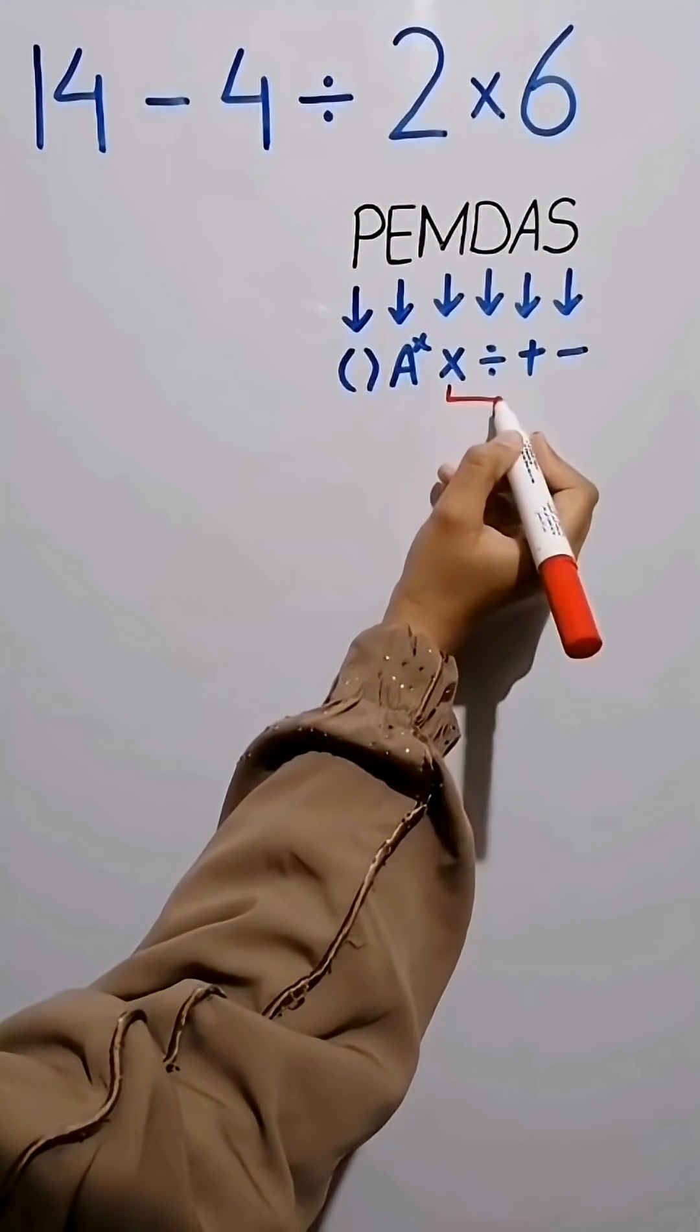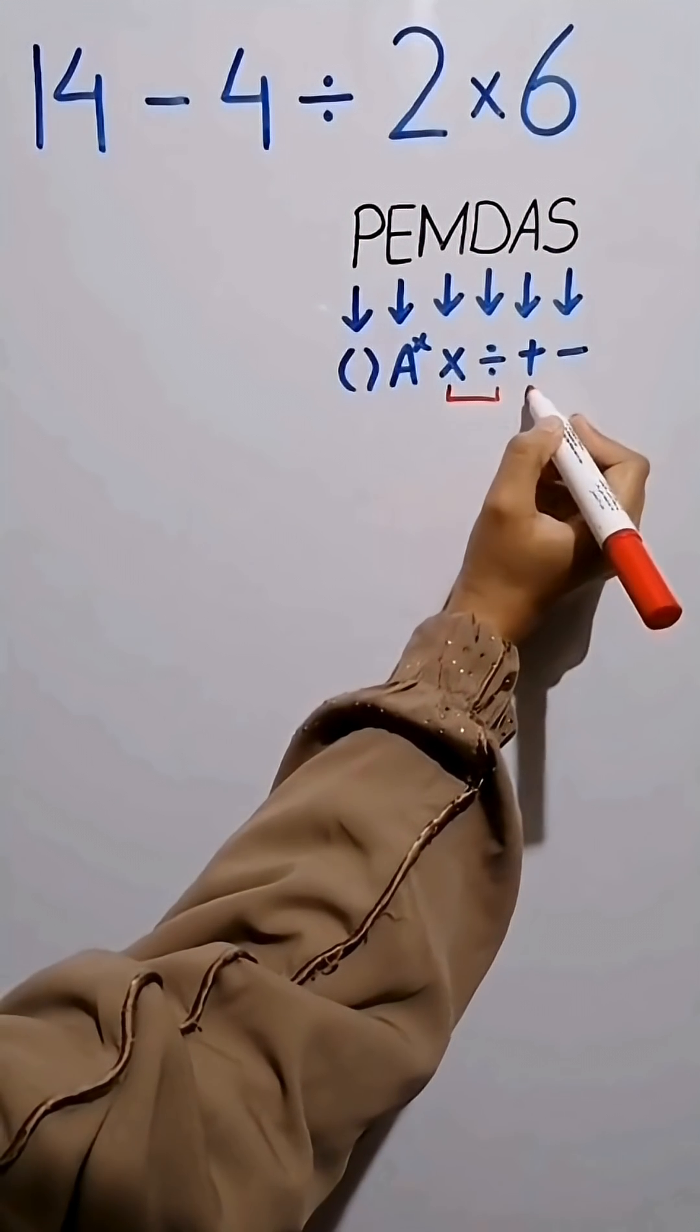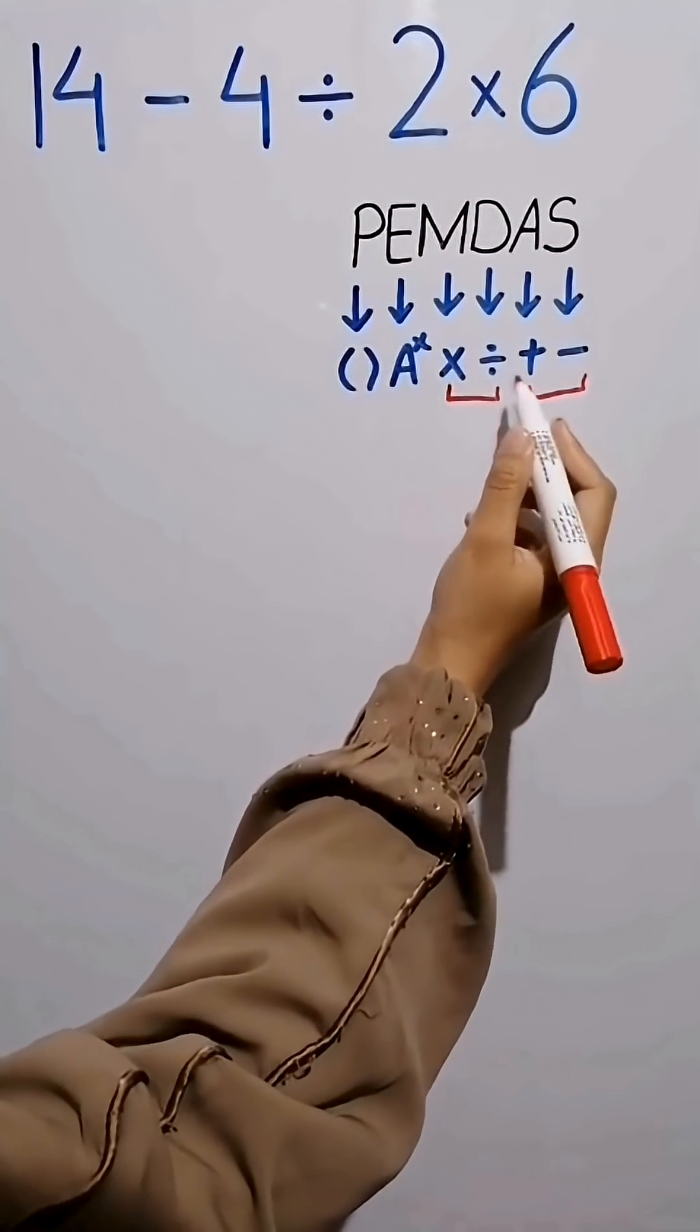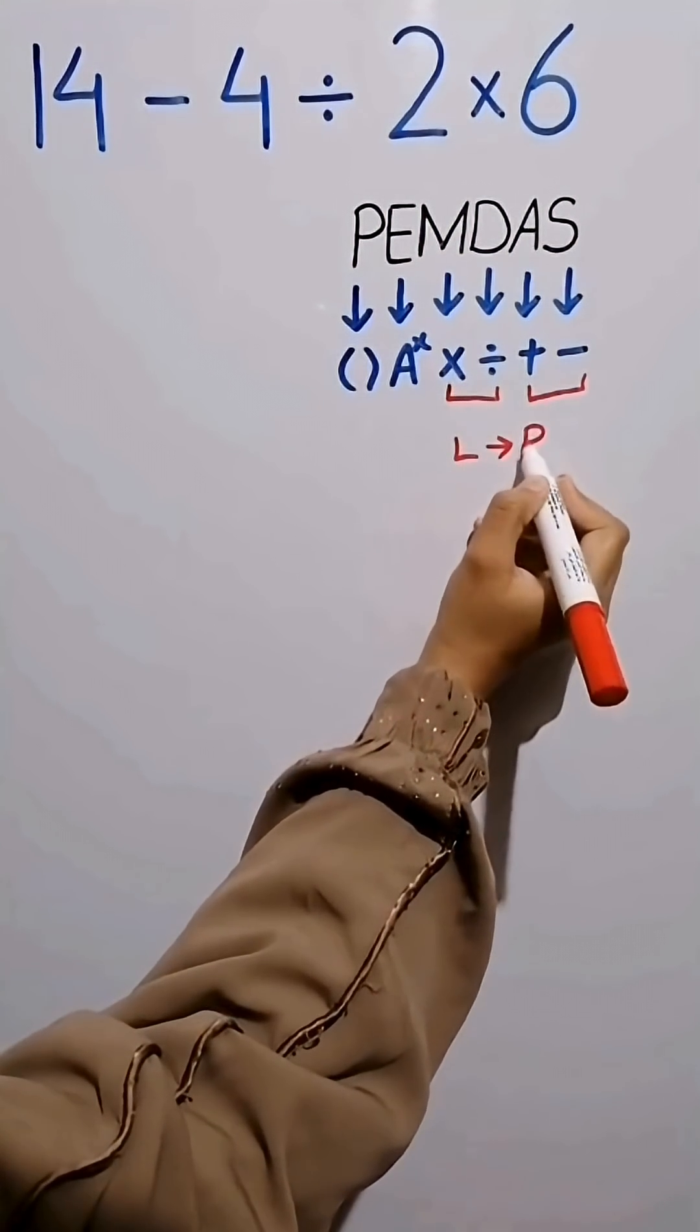Multiplication and division have the same level of priority. Also, addition and subtraction have the same level of priority. When we have both in an expression, we start from the left and simplify the question.